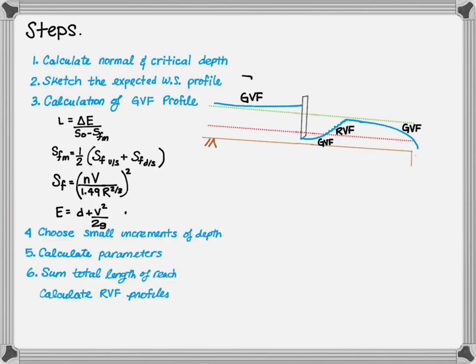The following outlines the steps to find a gradually varied flow profile. First, calculate both your normal depth and critical depth—without these, you cannot determine the channel type. Then sketch your expected water surface profiles, similar to the schematic shown here. You can see we have an M2 and a rapidly varied flow, which is a hydraulic jump.